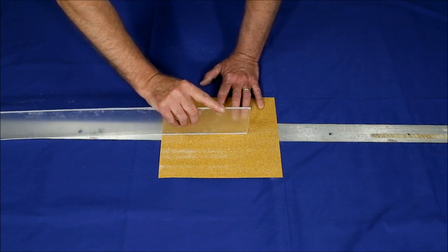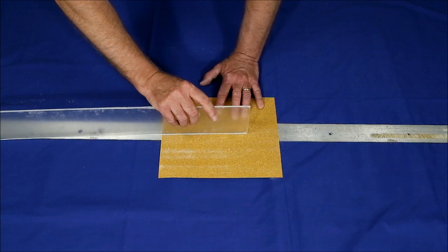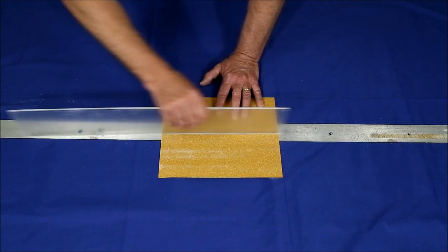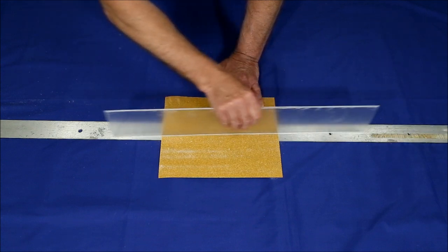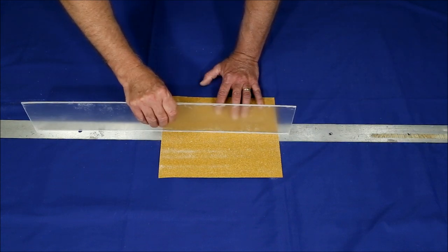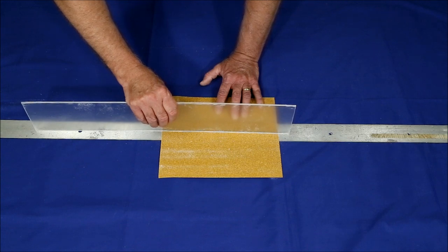If one of your side panels, for example, is a little taller than the other, you can sand it down to the point where it matches. If you don't do this, if one side is taller than the other, then your wave cell is not going to be a perfect rectangle.